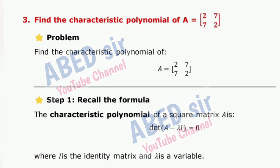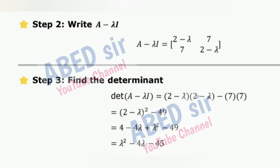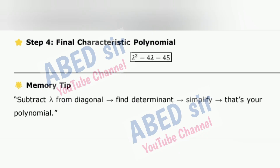Next important short question: Find the characteristic polynomial of matrix A. Step 1 — Recall the formula: the characteristic polynomial of a square matrix is found from det(A − λI) = 0, where I is the identity matrix and λ is a variable. Step 2 — Write A − λI. Step 3 — Find the determinant. Step 4 — The result is the final characteristic polynomial. Memory tip: Subtract λ from diagonal, find determinant, simplify — that's your polynomial.